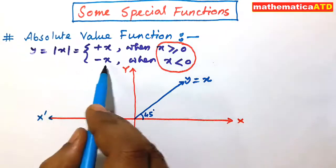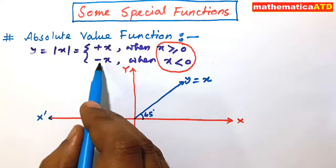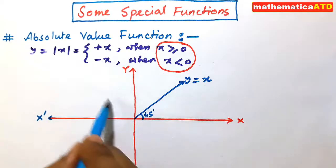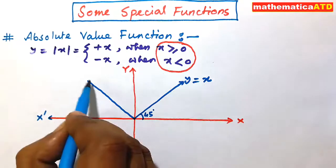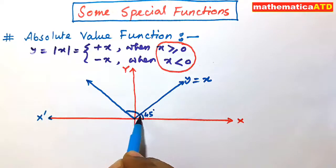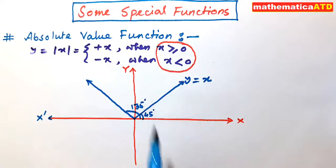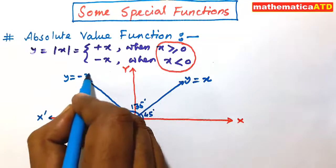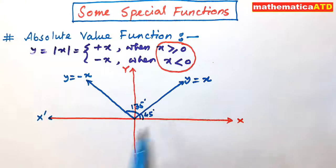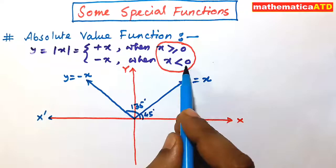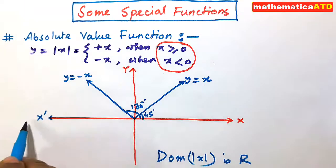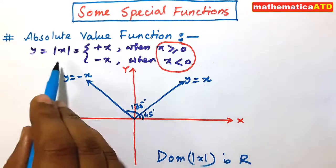Another part is y = -x, and the slope is -1, that means the angle is 135 degrees with the positive direction of x-axis. This is y = -x. The domain of this function covers x ≥ 0 and x < 0, meaning the domain of |x| is ℝ, that is -∞ to +∞.